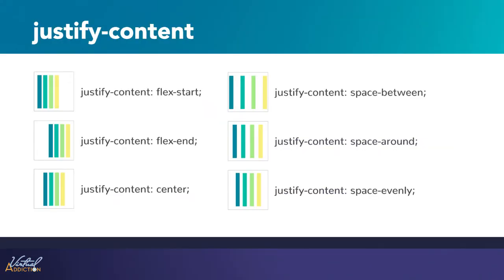The initial value is flex-start, which lines all the items up at the starting edge of the container. You can also use flex-end to line them up at the end, or center to line them up in the center. In addition, there are space values that set the spacing of the elements within the container. Let's look at how these work in practice.